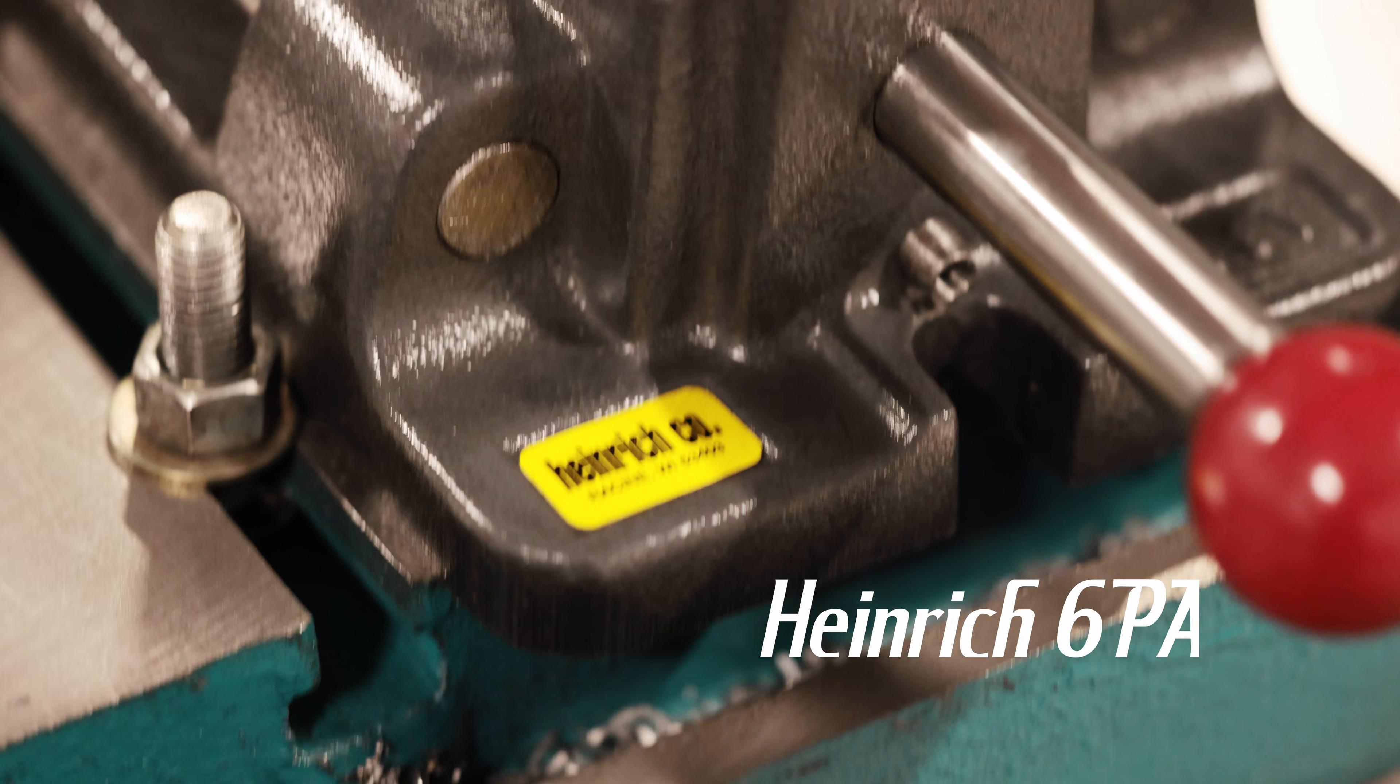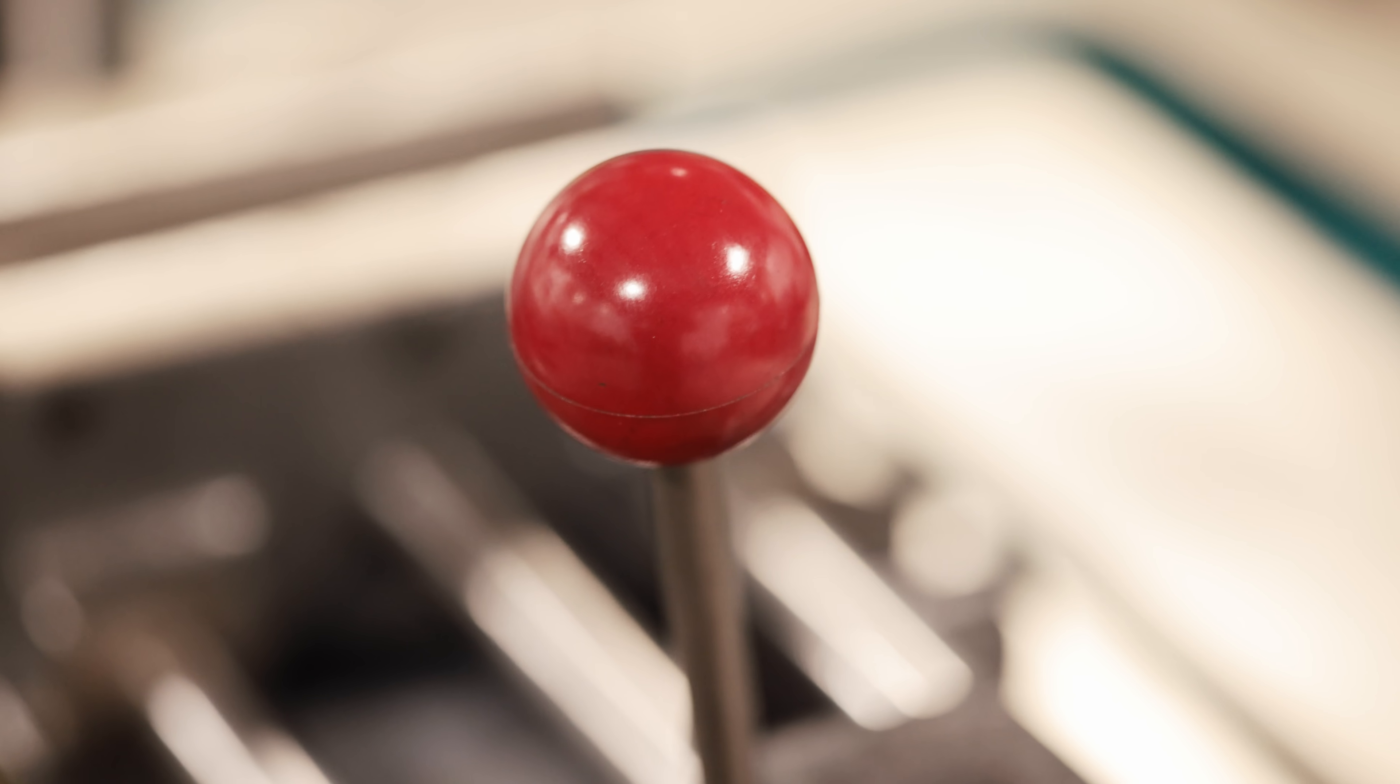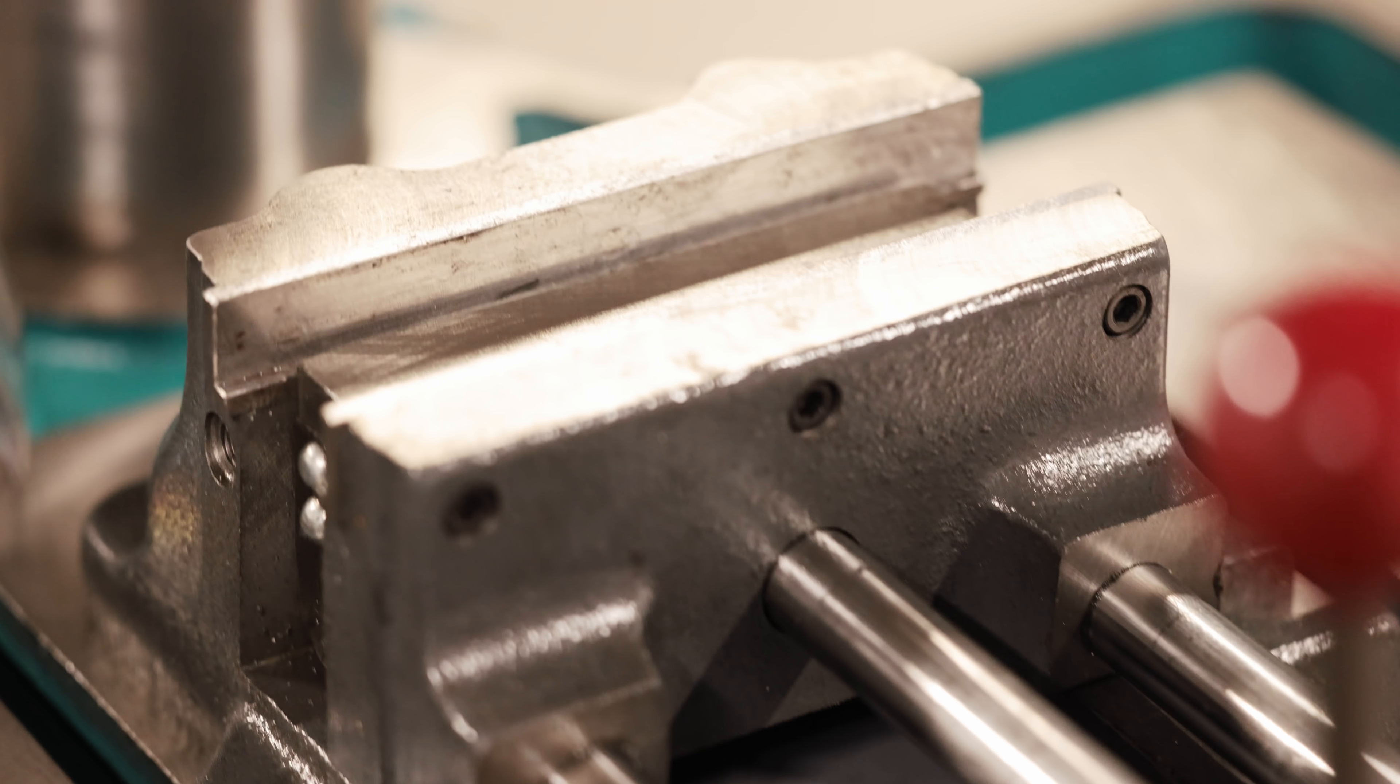We also have a Heinrich 6PA Gritmaster vise. This version is the pumping action which adds up to 350 pounds of holding pressure against the locking jaw to the work.